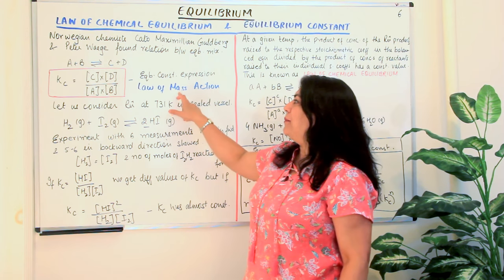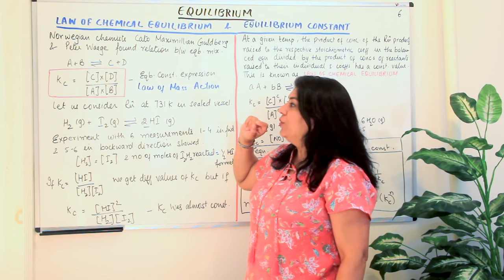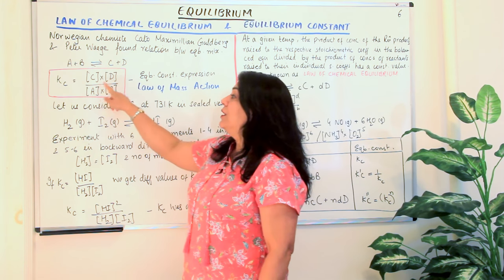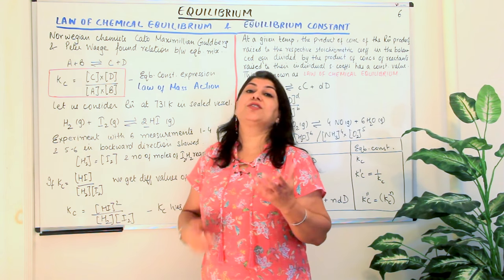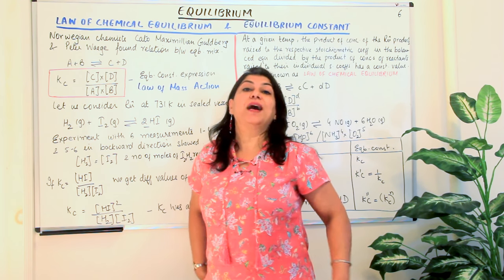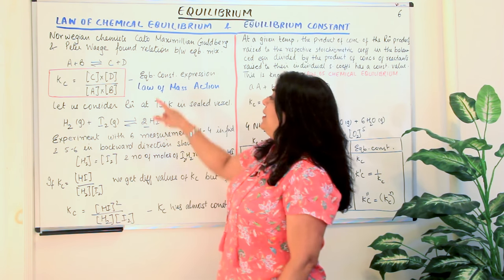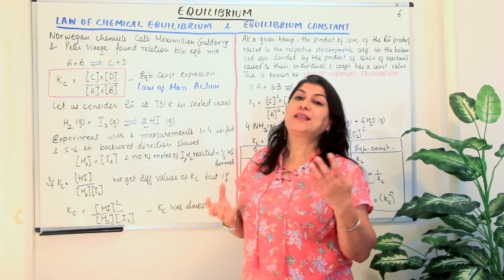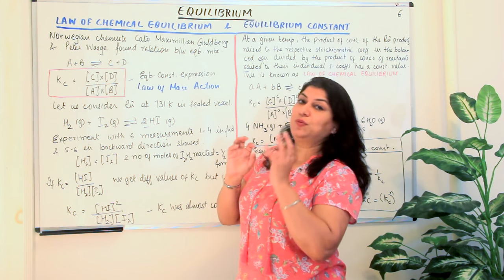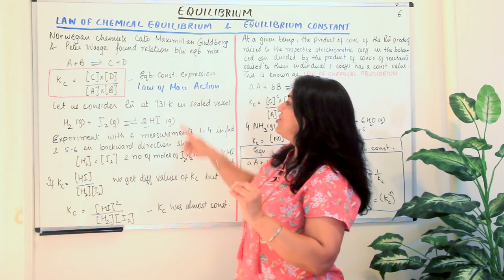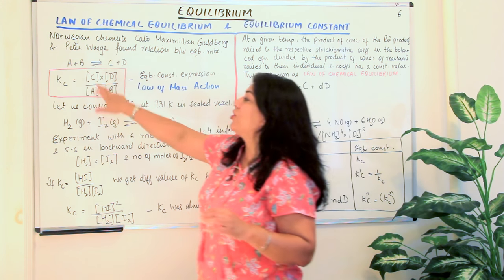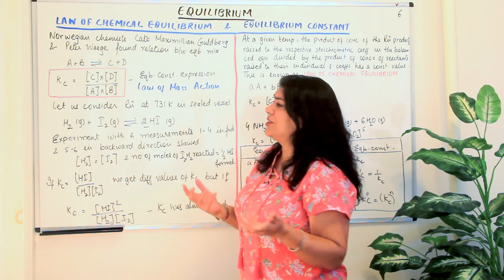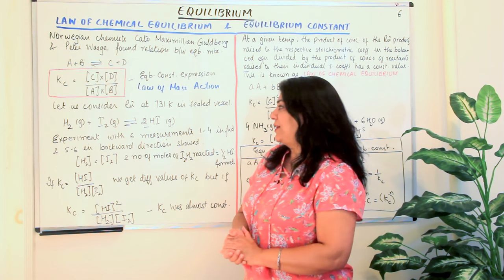Now, what is the reason for calling it mass action? Earlier, concentration was not called concentration — it was called active mass. That is why this was also known as the law of mass action, because at that time the equilibrium constant was based on the active masses of the reactants and the products, which today we call concentrations.